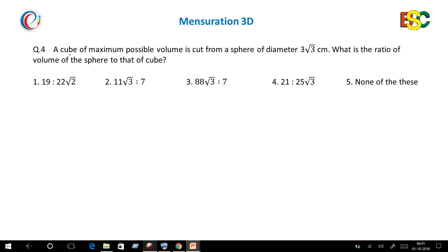Here the question is: a cube of maximum possible volume is cut from a sphere of diameter 3√3 centimeter. You have to find the ratio of the volume of the sphere to that of the cube.